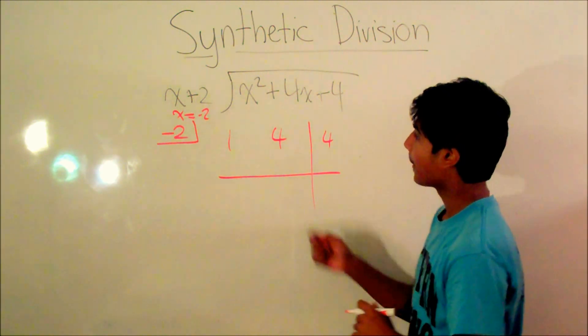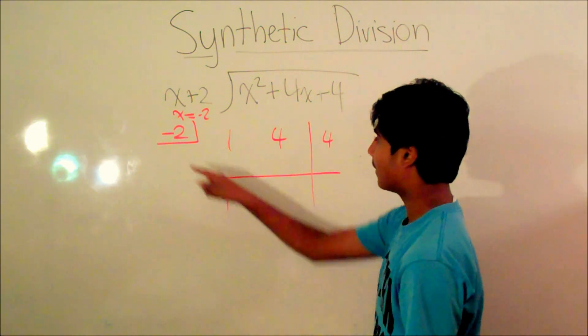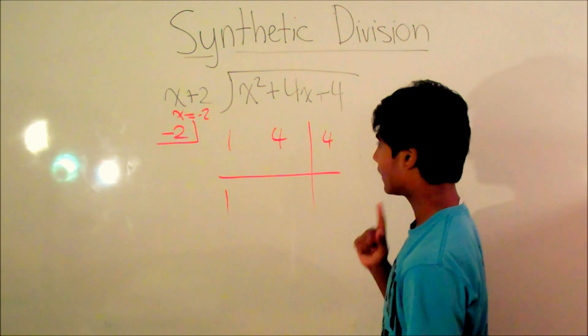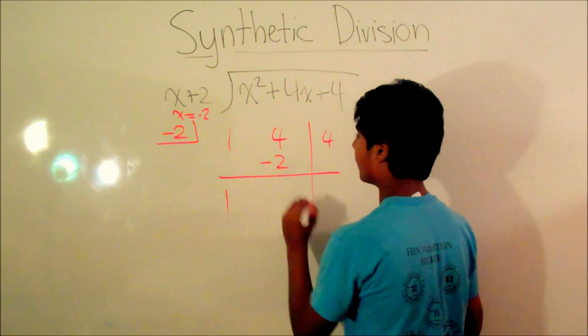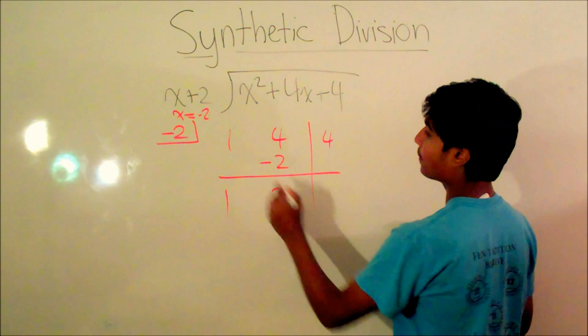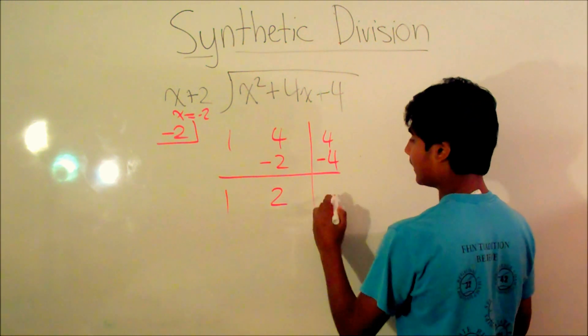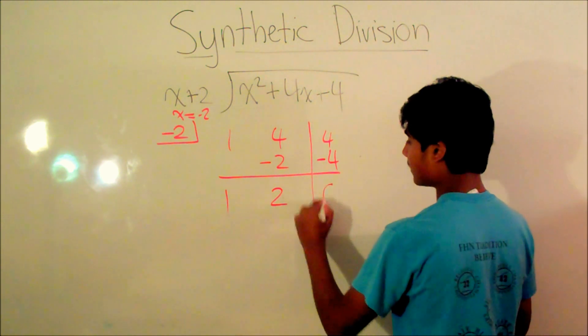So we have 1. We just put that down, 1 over here. Now we multiply that by negative 2. That's negative 2. And we put that in here. 4 minus 2 is 2. Now then we put negative 2 times 2, which is negative 4, over here. And then we subtract 4, and it's 0.